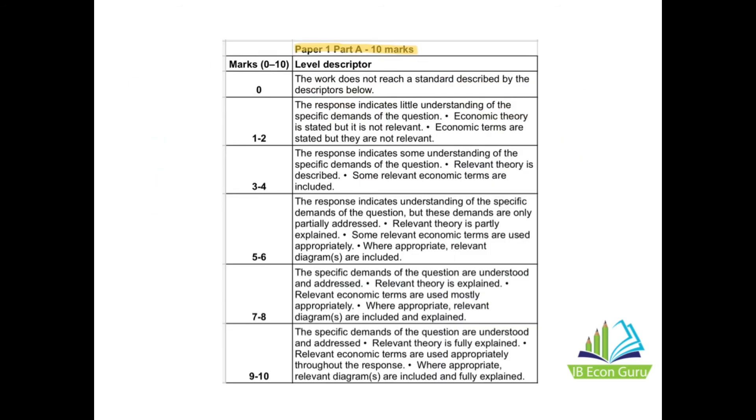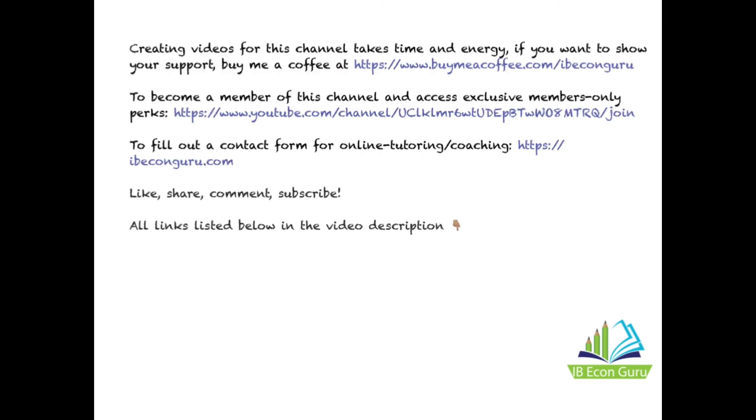I include this in every video, but again it's a good reference. This is a Paper 1 Part A, and these are the different mark bands. I'm assuming everybody's aiming for the highest mark band—Level 5, a 9 or 10 out of 10. To achieve this, you have to show that the specific demands of the question are understood and addressed, relevant theory is fully explained, relevant economic terms are used appropriately throughout the response, and where appropriate, relevant diagrams are included and fully explained. I believe the essay I have structured in this video matches those mark bands.